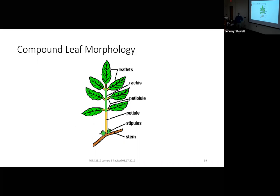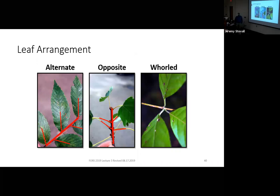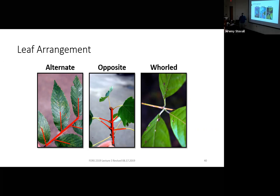Most of our species this semester are alternate, where the leaves alternate from each other on the twig. A much smaller proportion are opposite — that's where our MAD CAT BIG HIPPO acronym comes in. We'll learn two species in lab this semester that are whorled, where they have more than two leaves at each node — buttonbush and catalpa. If you spot something that's whorled, it's easy to narrow down. We do have a few species like our azaleas where internode growth is often slow, so they appear to be whorled when they are not — that slow internode growth can be confused.